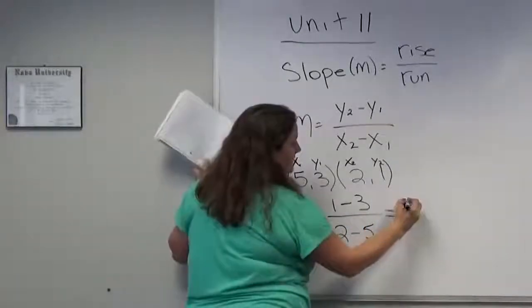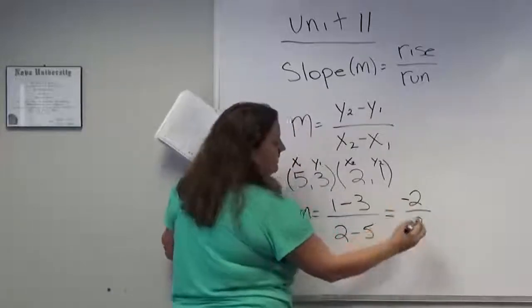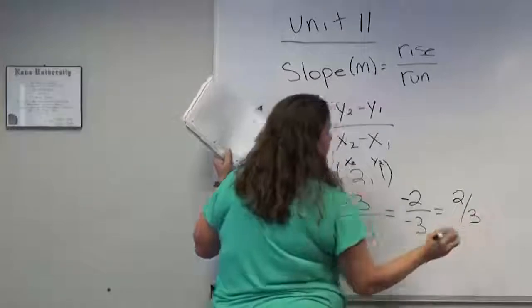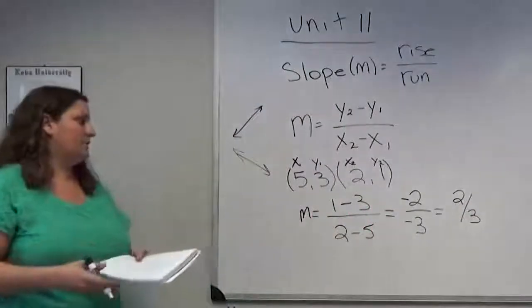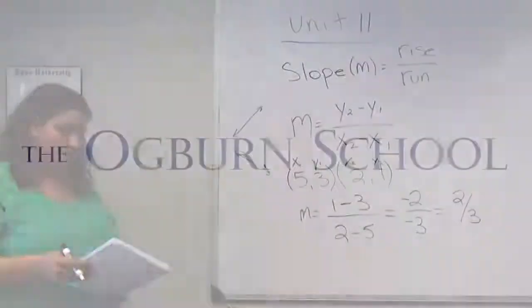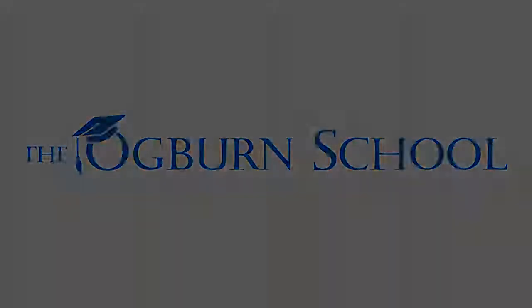So we'll do that arithmetic. It's negative 2 divided by negative 3. Negative divided by negative is a positive, so our slope here is 2 thirds. It's a positive slope, so we know that the line will lean right.